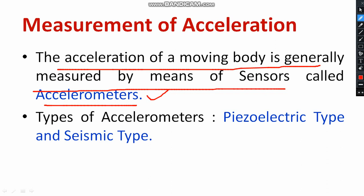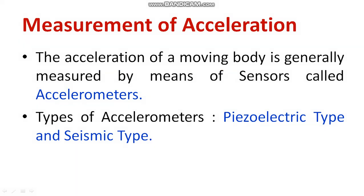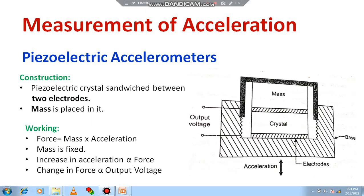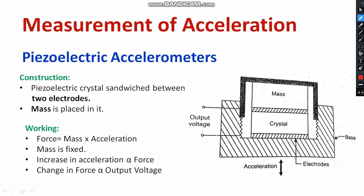Accelerometers can be divided into two types. The first one is piezoelectric type, another one is seismic type. For sensitive measurement, you can go ahead with the seismic type accelerometer. First of all, I will introduce the diagram of the piezoelectric type accelerometer.